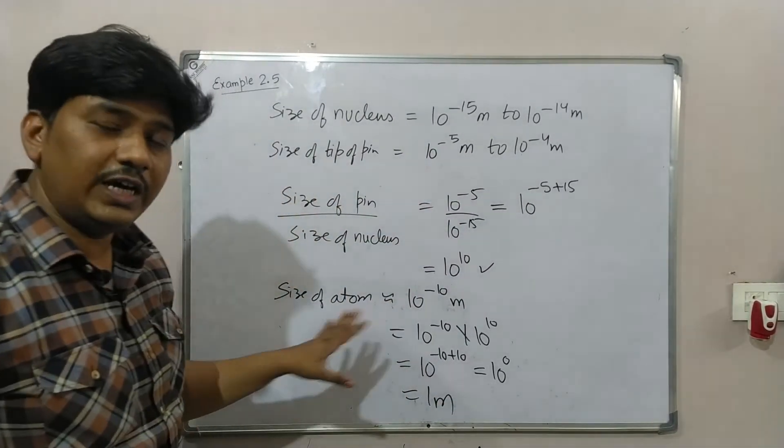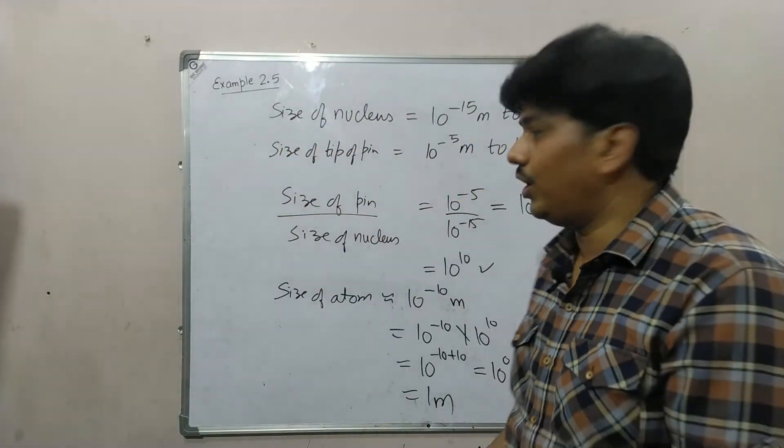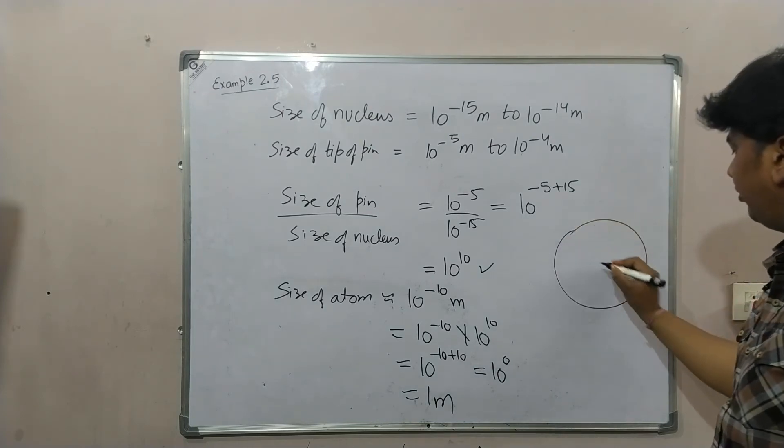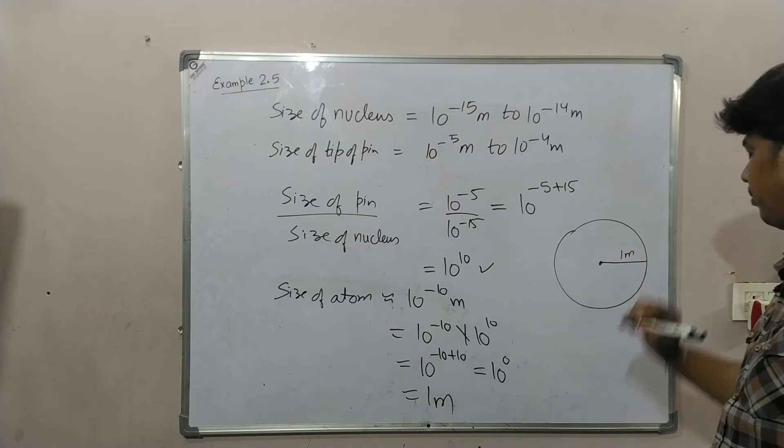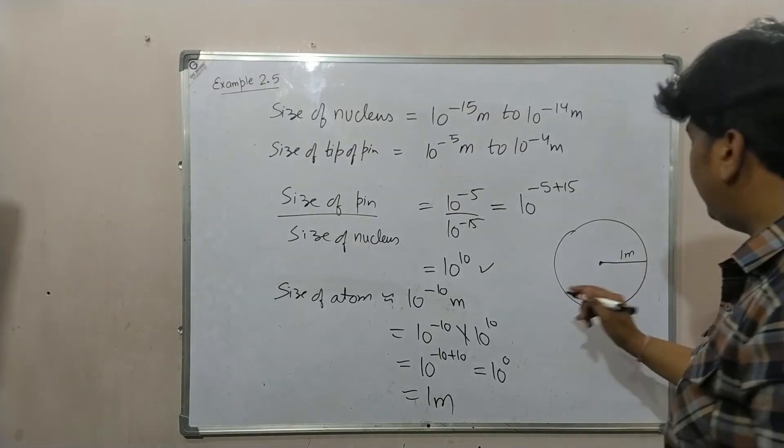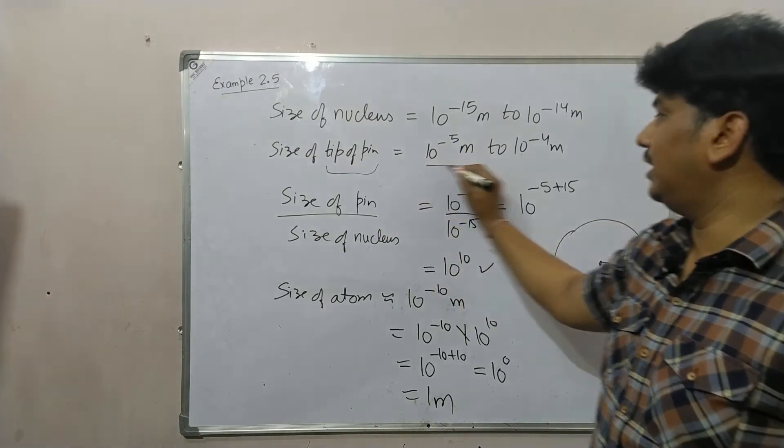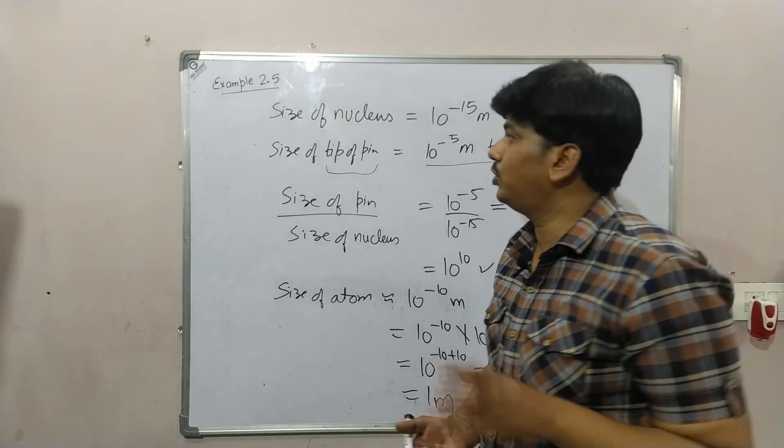This means the size of atom will be 1 meter. Here you will draw a sphere with radius 1 meter, which will represent the atom. And at the center of that atom, this size nucleus will be there. This is how we solve example number 2.5.